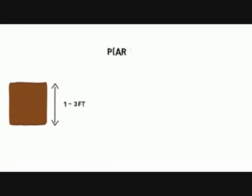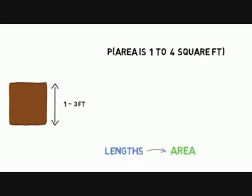Consider this question. How likely is it that the area of the next square will be between one square foot and four square feet? We're switching from talking about the lengths of the square's edges to talking about its area. But this is actually the same question as before.